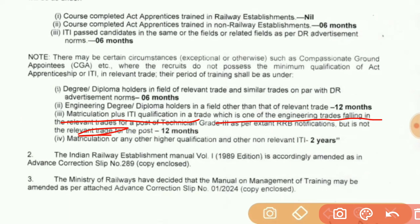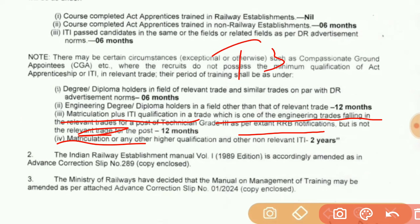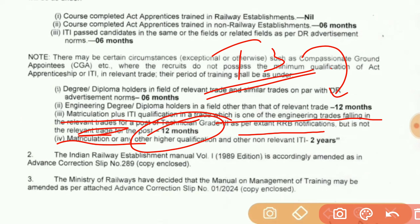Relevant trades for the post of technician are as per the extent RRB notification. But if it is not a relevant trade for the post — basically, what I am saying is that if you are doing matriculation plus ITI with Technician Grade 3 and the post is in relevant trades, but if you are not in a trade-related trade, it will be 12 months training.